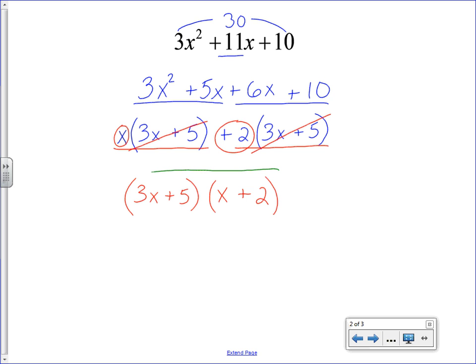And now I have two binomial factors, which if I was to FOIL them or multiply them back together, would give me the quadratic trinomial that I started with. So this is a way of factoring quadratic trinomials when a is not 1. That is all.